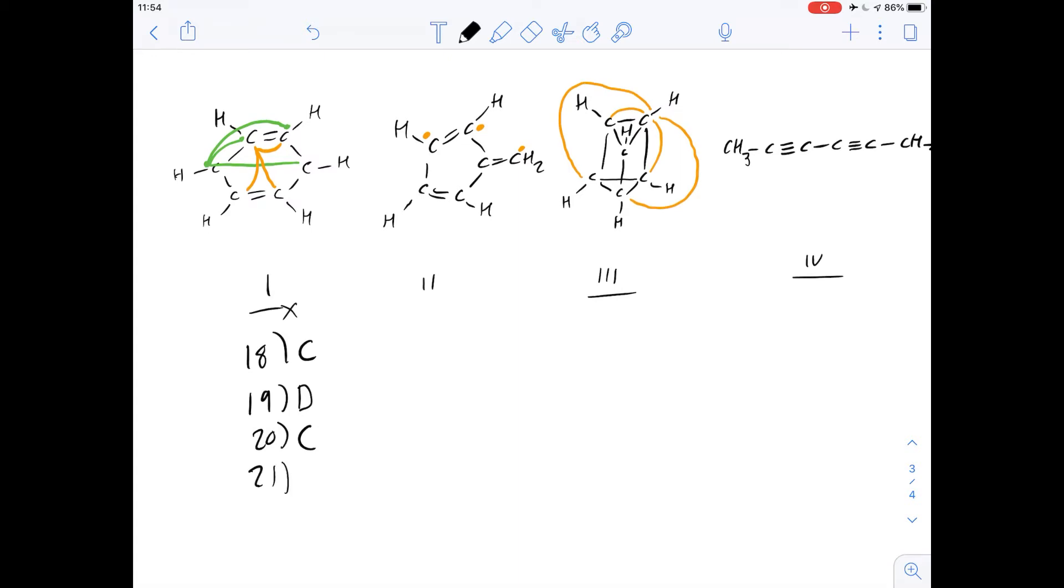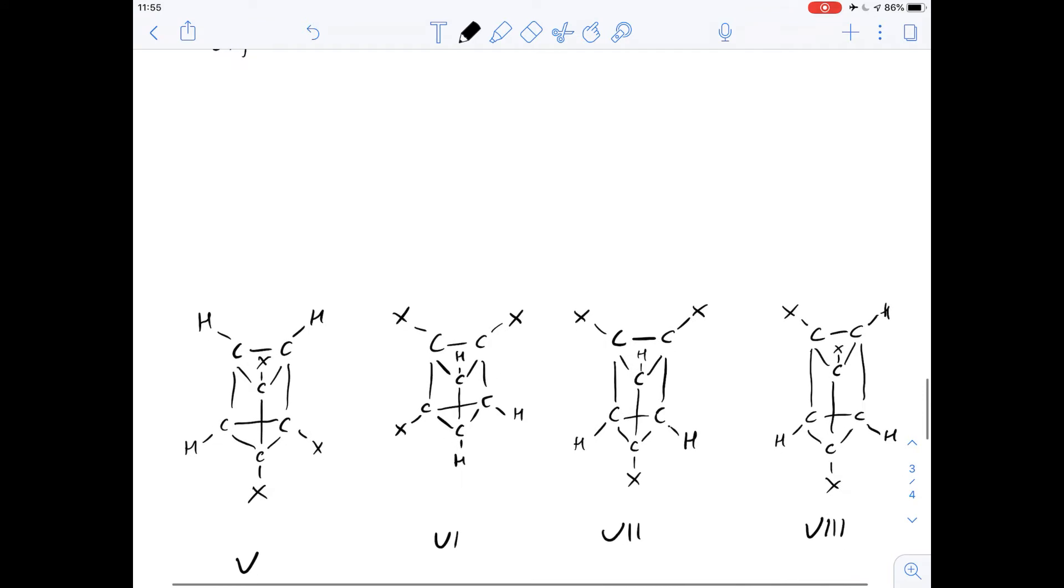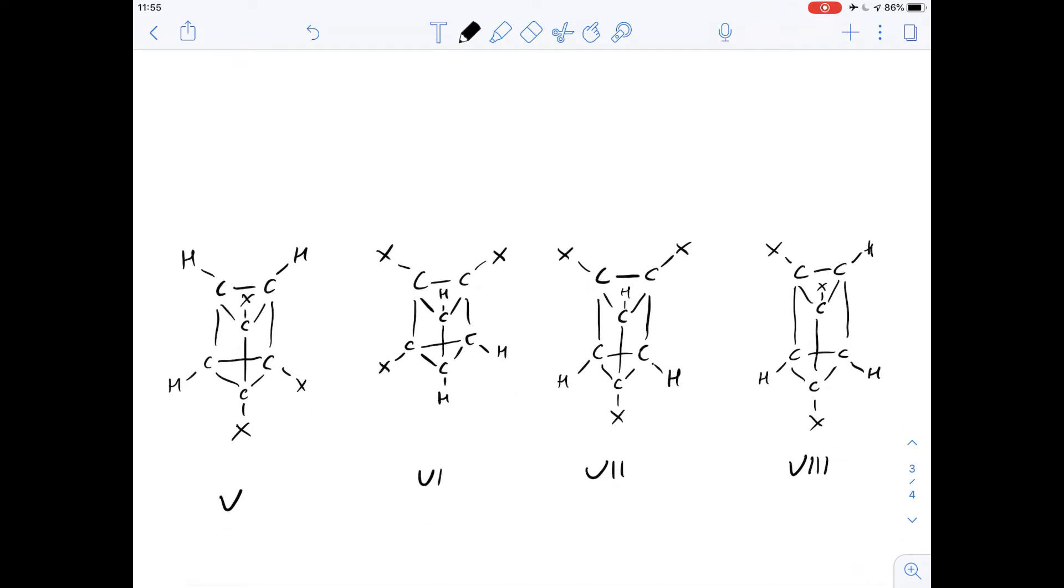Let's look at number 21. It says consider these four tri-substituted isomers of structure 3 with the formula given. Which of the following is correct? It talks about the equivalency of isomers and what that means is basically they're the same molecule but just rotated.